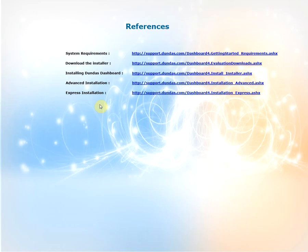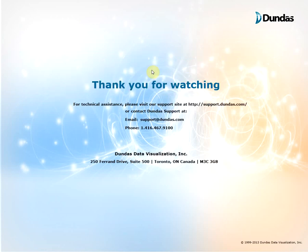All the steps mentioned in this video can be found on our support site using the links shown on your screen. Make sure you are set with all the system requirements and download the installer. The process described in this example is the advanced installation; express installation is the minimum configuration mentioned earlier in the video. Thank you for watching, and if you have any questions you can visit our support site at support.dundas.com or contact Dundas support using the contact information shown on your screen. Thank you very much.